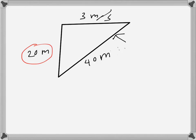A kite is 20 meters above the ground and it is moving horizontally with a velocity of 3 meters per second. We have to find at what rate the string is being let out when the string length is 40 meters.